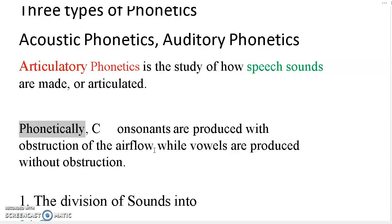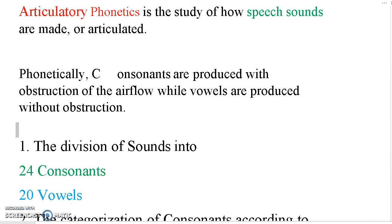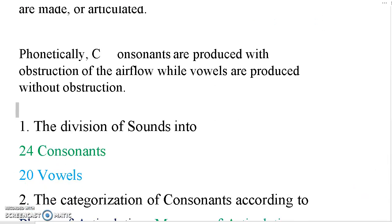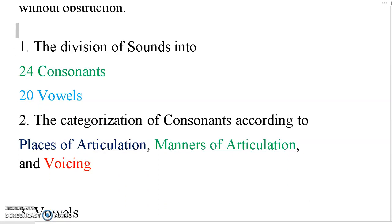Vowels, on the other hand, are produced without obstruction of the air flow. This is the main difference between consonants and vowels. In phonetics we study this division: English has 24 consonants and 20 vowels.